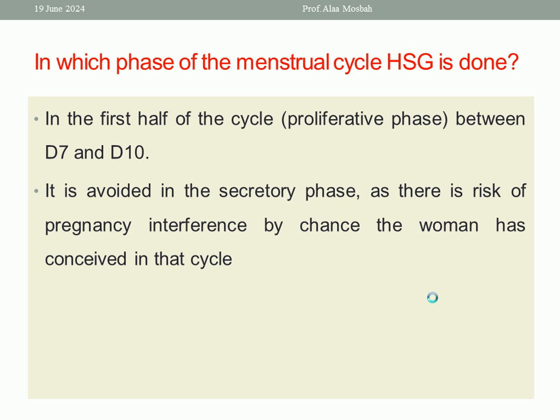Why is it avoided in the secretory phase? Because there is a risk of pregnancy interference — by chance the woman may have conceived in that cycle. Who can confirm that this lady did not conceive in that cycle? So if you perform Hysterosalpingogram in the secretory phase, you may interrupt a pregnancy. Therefore, it must be done in the early proliferative phase, between day 7 and day 10.